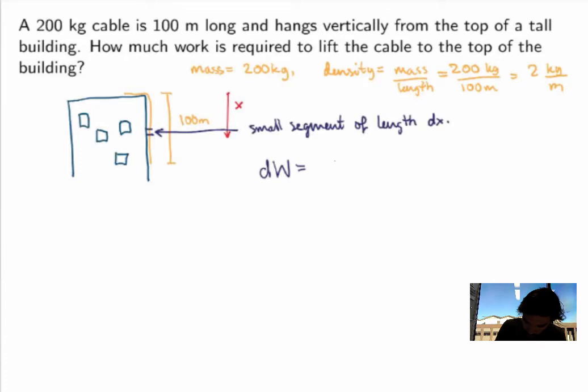Now I know that this is from physics given by the force applied on this segment, times the distance that I'm lifting this segment. Now the force here is just the gravitational force. So the force itself will be given by the mass of this little segment times g, where g is the gravitational acceleration, times the distance.